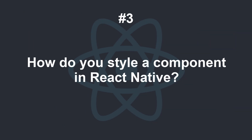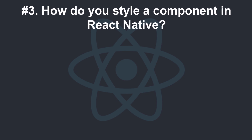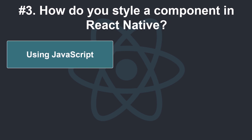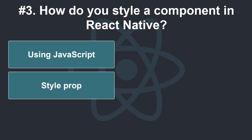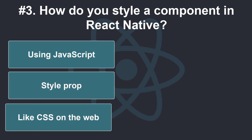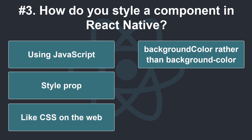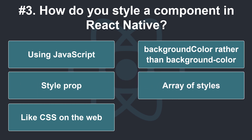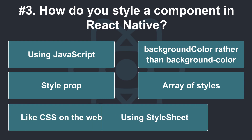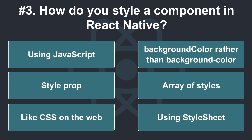How do you style a component in React Native? With React Native, you style your application using JavaScript. All of the core components accept a prop named style. The style names and values usually match how CSS works on the web, except names are written using camel casing — for example, backgroundColor rather than background-color. You can also pass an array of styles; the last style in the array has precedence, so you can use these to inherit styles. As a component grows in complexity, it's often cleaner to use StyleSheets to define several styles in one place.